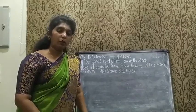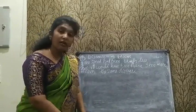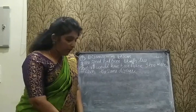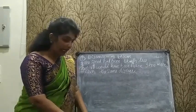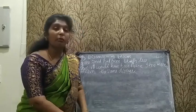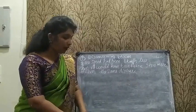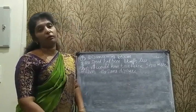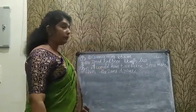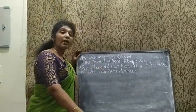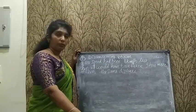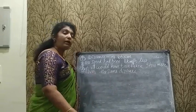Now the fourth question: a train travels a distance of 480 km at a uniform speed. If the speed had been 8 km per hour less, then it would have taken 3 hours more to cover the same distance. We need to find the speed of the train and frame a quadratic equation.